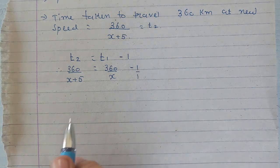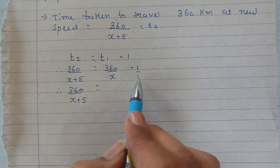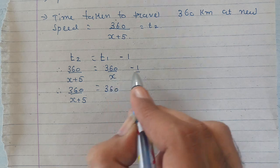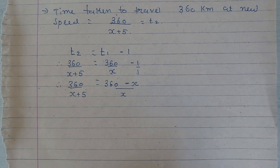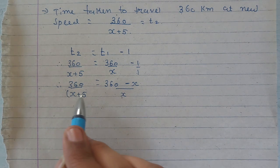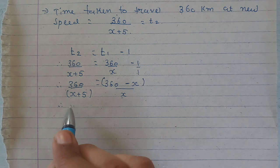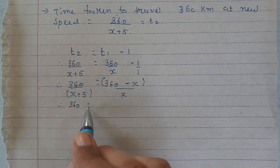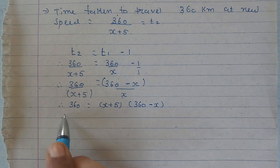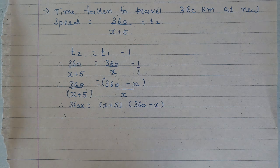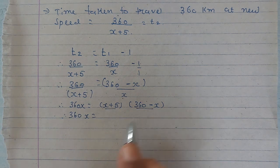پہلے RHS میں 1 consider کر کے cross multiply کرتے ہیں۔ So 360/(x+5) = (360 − x)/x۔ Cross multiplying: 360 × x = (x+5)(360 − x)۔ LHS will remain as it is: 360x = (x+5)(360 − x)۔ RHS میں ان دونوں brackets کا multiplication ہوگا۔